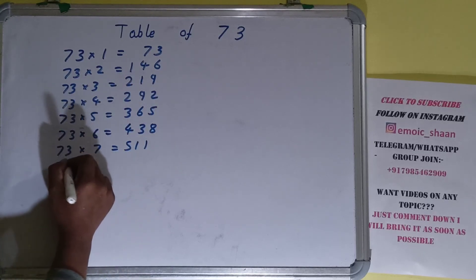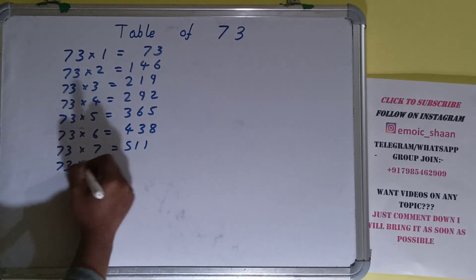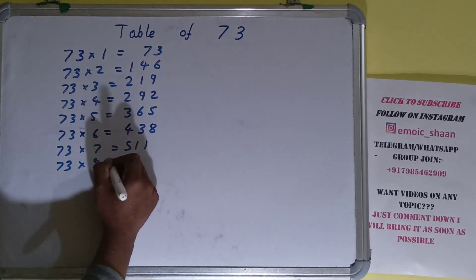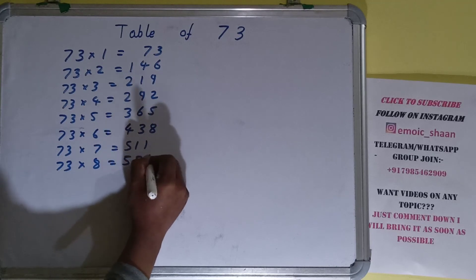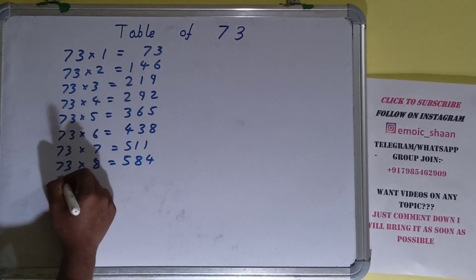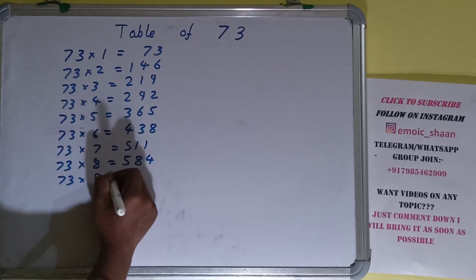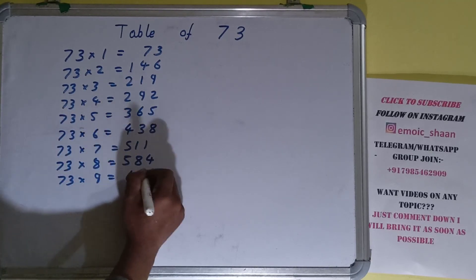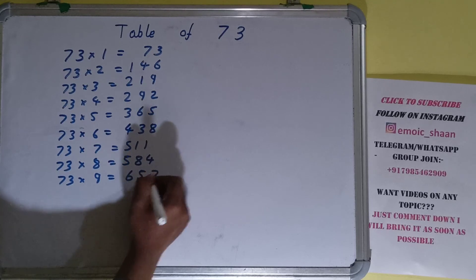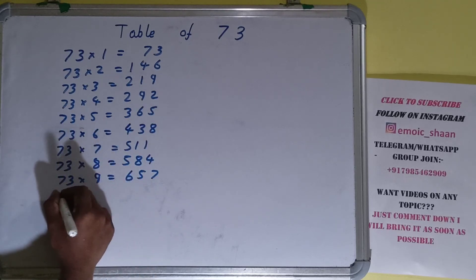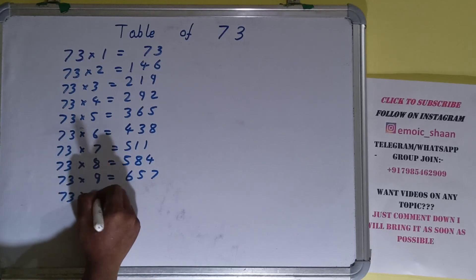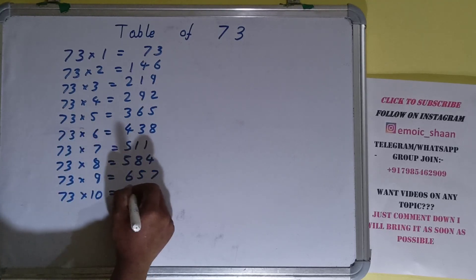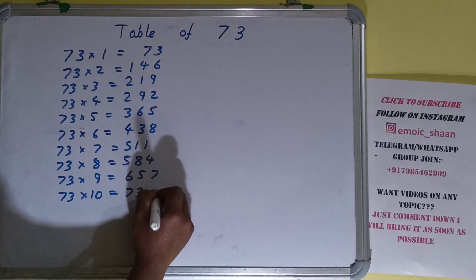73 into 8 is 584. 73 into 9 is 657. And 73 into 10 is 730.